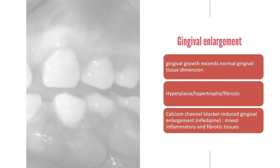First of all, we are going to talk about gingival enlargement. Gingival enlargement is a feature of periodontal disease where gingival growth exceeds normal gingival tissue dimension, increasing gingival size. Hyperplasia, which is increased number of cells, hypertrophy, increased cell size, and fibrosis are observed during gingival enlargement and cannot be accurately differentiated. Calcium channel blocker-induced gingival enlargement, especially those induced by amlodipine, shows mixed inflammatory and fibrotic tissues.